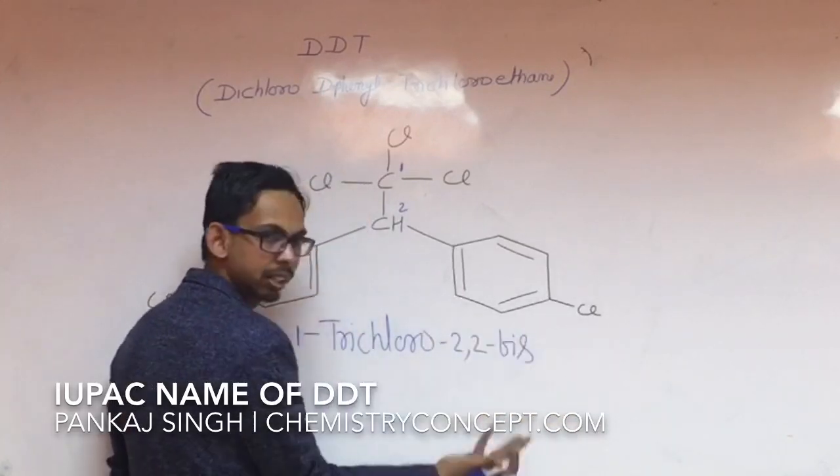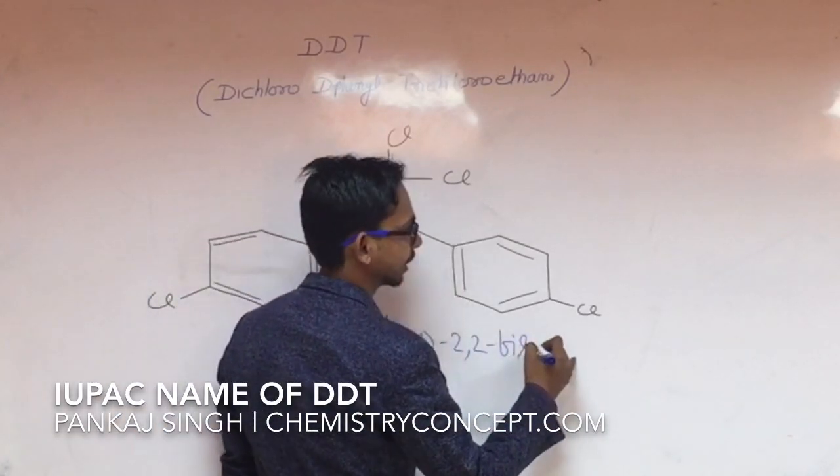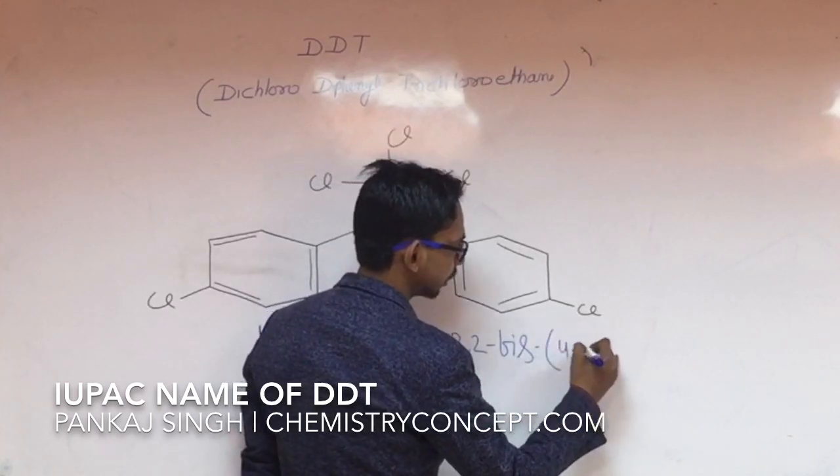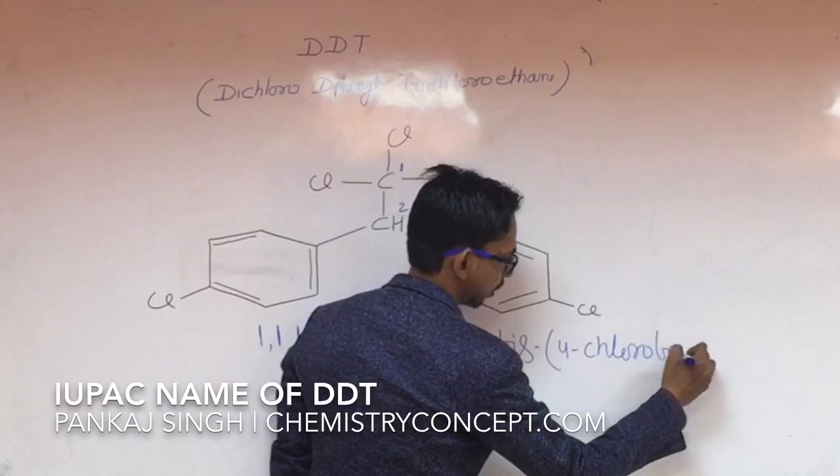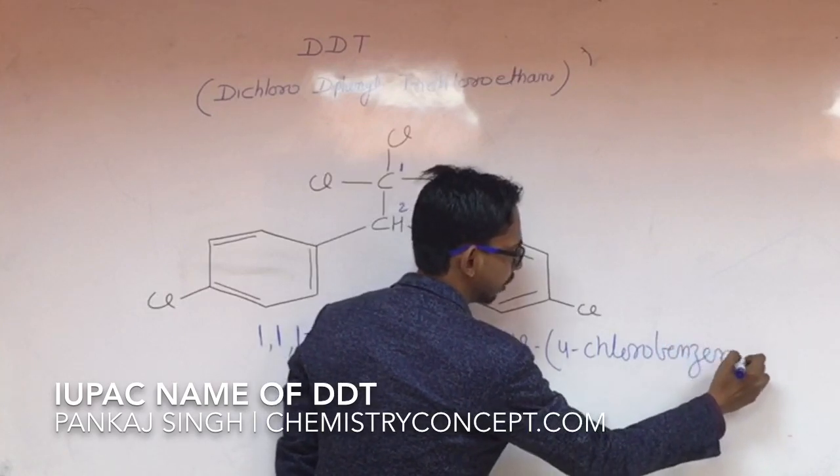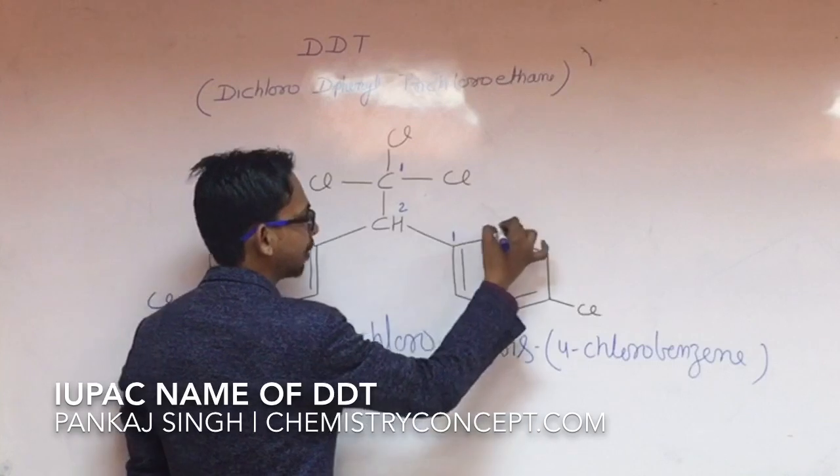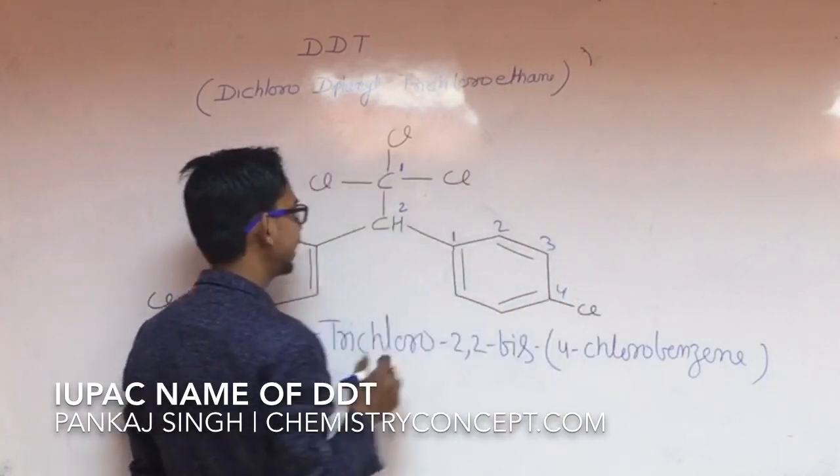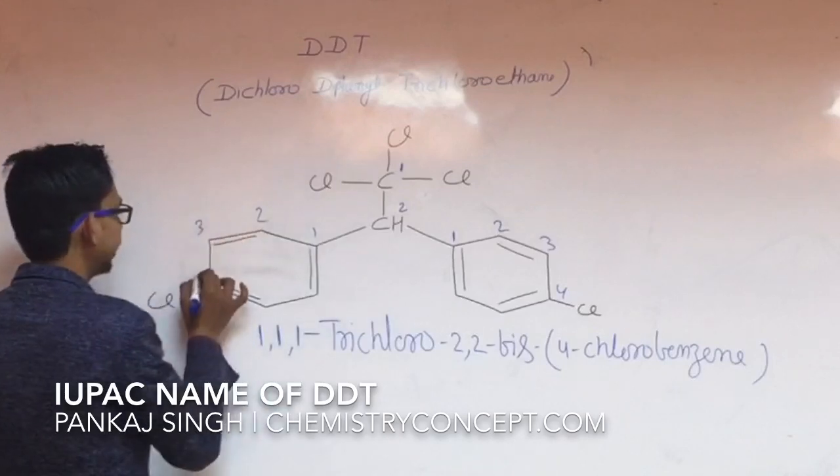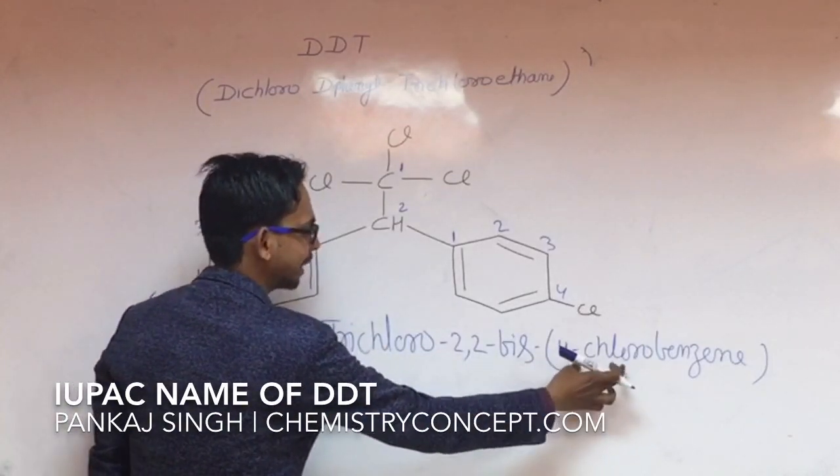Bis for chlorobenzene. Why four chlorobenzene? What is the name of this compound? If this is carbon one, carbon two, carbon three, carbon four, this is four chlorobenzene. In the same way, this is also four chlorobenzene. So there are two four chlorobenzene attached to carbon two of ethane.